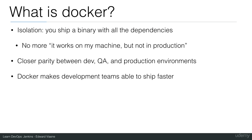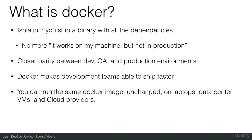Docker makes development teams able to ship faster because you can iterate much more quickly and have a lot fewer problems when deploying new software. You can run the same Docker image unchanged on laptops, data centers, VMs, and cloud providers. The underlying operating system doesn't really matter — you just install the Docker engine and run a Docker image.